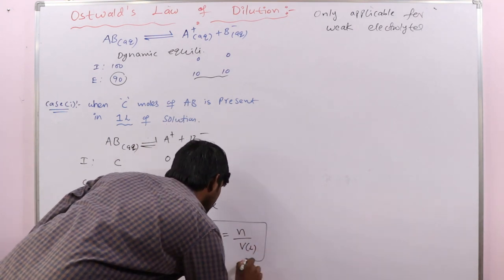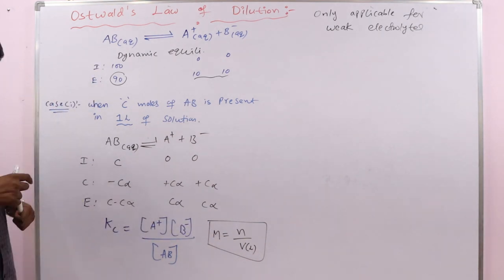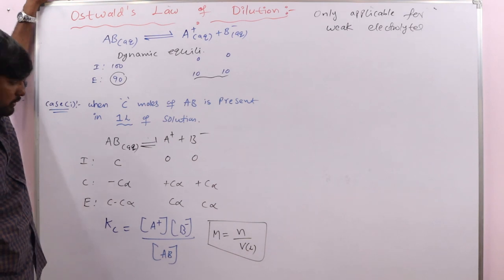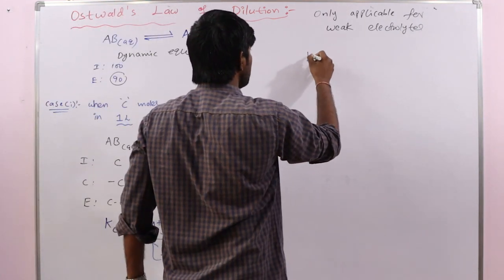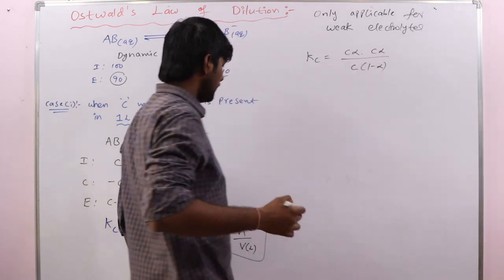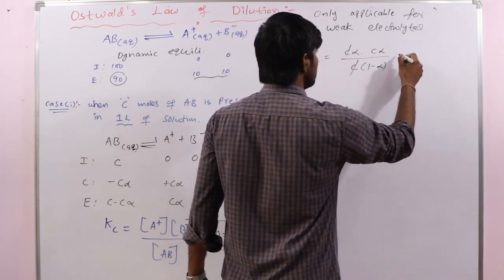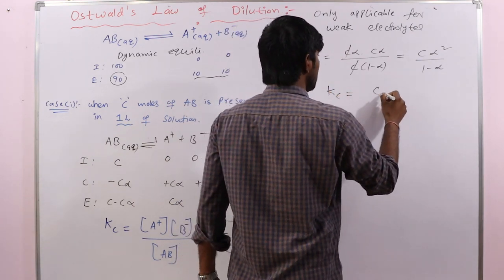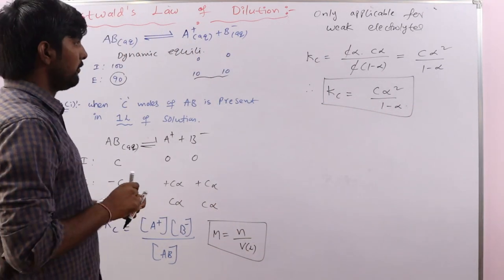Molarity equals n divided by volume in liters. Since the volume is one liter, molarity equals the number of moles. Substituting: Kc equals (Cα × Cα) divided by C(1 − α). Taking C common gives C(1 − α) in the denominator; C cancels, and we finally get Kc equals Cα² divided by (1 − α).